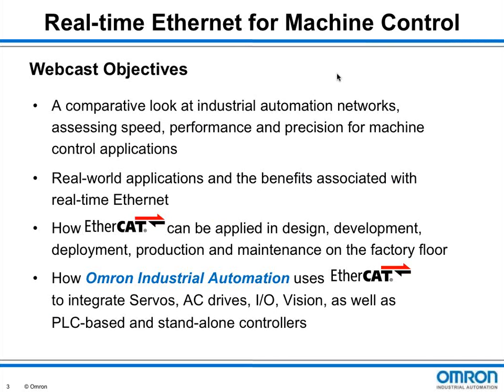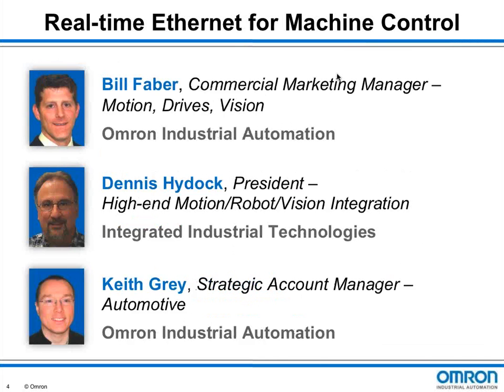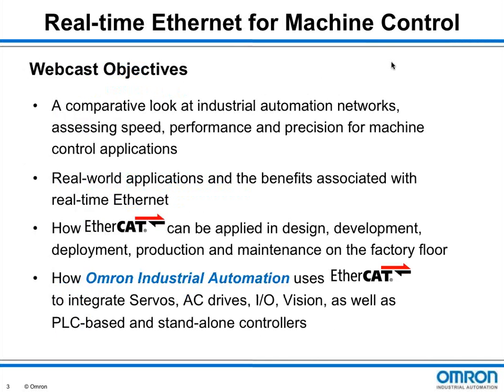Every week, more and more devices are being released with Ethernet ports built in, ranging from instrumentation for processing facilities to sensors for batch processing and discrete manufacturing applications. But the one issue that still comes up when comparing industrial Ethernet to dedicated industrial networks is determinism. Many engineers are still not entirely sold on Ethernet's capabilities for high-speed motion control on critical production assets.